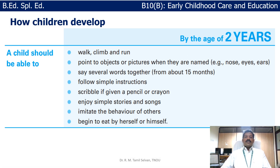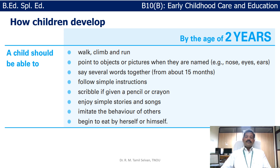What happens to the child at two years of age? A child should be able to walk, climb, and run. They should point to objects or pictures when named — for example, if you ask the child to show where the nose is or point to their ears, they should do so. The child should try to identify and touch body parts, and should be able to say several words together and follow simple instructions like 'bring some water,' 'sit down,' or 'stand up.'